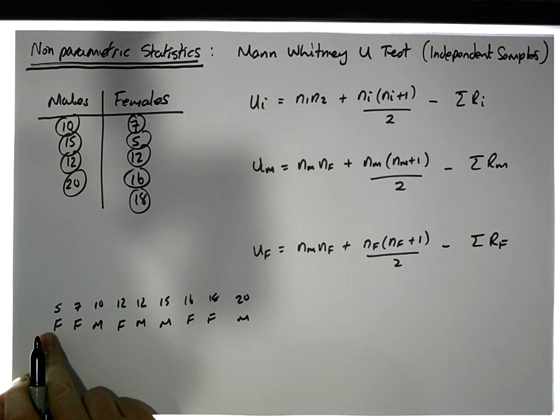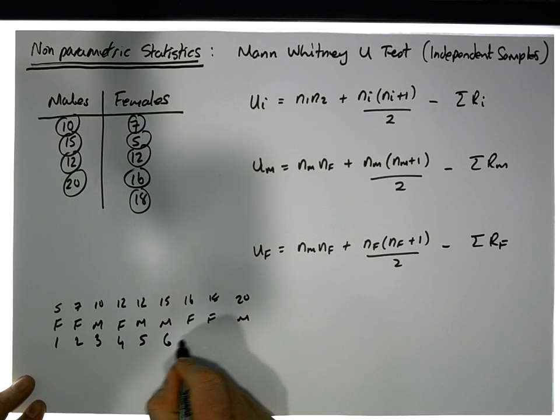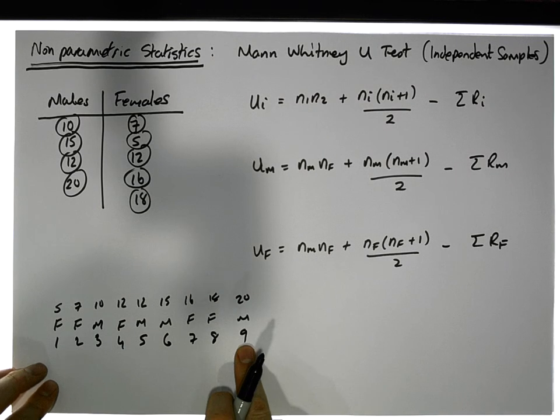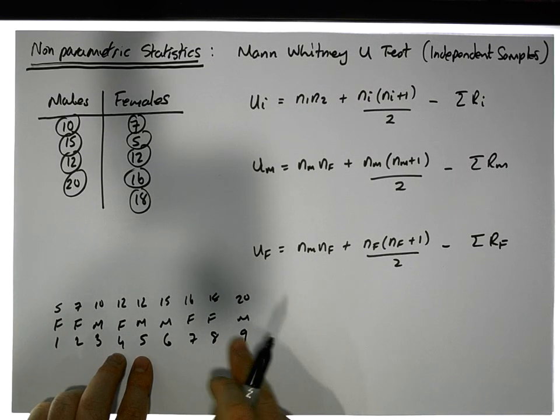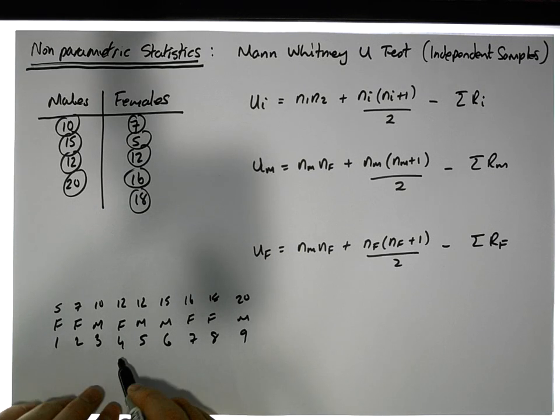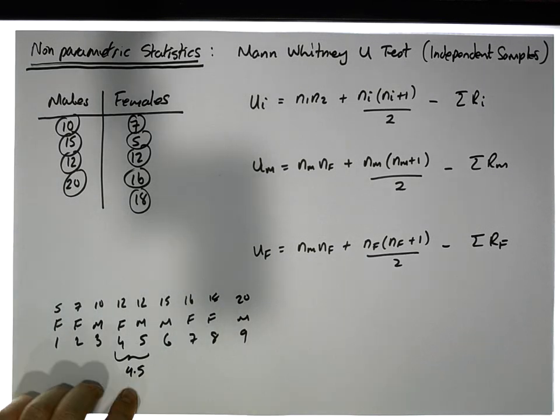And what we're going to do is we're going to rank them from smallest to largest. This is the first, the second, the third, the fourth, the fifth, the sixth, the seventh, the eighth, the ninth value. You can see the largest value got the highest rank, the smallest value got the smallest rank. But let's keep in mind, if we have ties, we need to average them. In this case, there's only two values that are tied together. So it's 4 plus 5 divided by 2 gives us 4.5. If there were three values, we'd add them together, the actual assigned ranks, and we divide by three, but in this case it's 4.5.